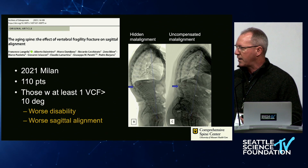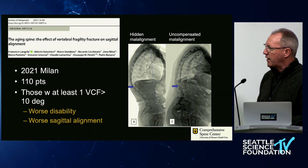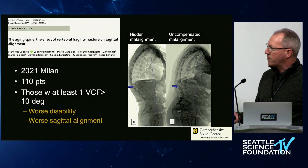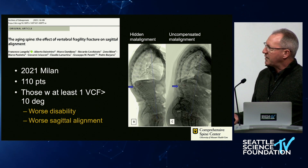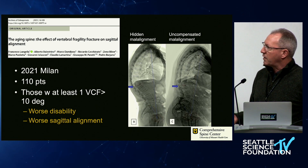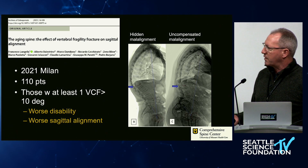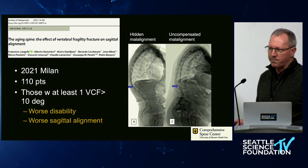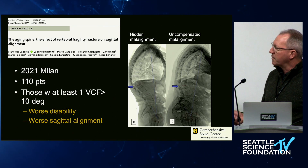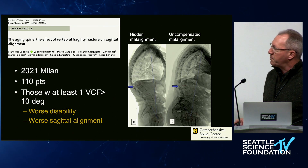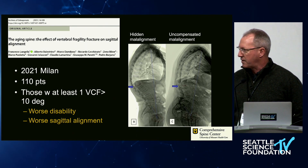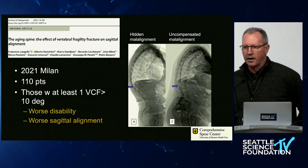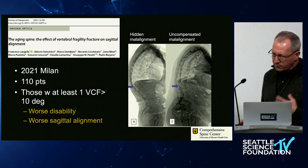Interestingly, I'd like you to focus on the standing films. The authors made the distinction between 'hidden malalignment' — in which the patient has enough lumbar lordosis to compensate — versus 'uncompensated malalignment,' in which they can't get enough lordosis in the lumbosacral area to compensate. I think that's probably a little inkling about how we should be looking at these patients.